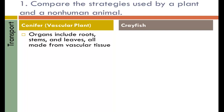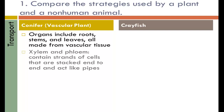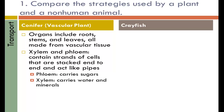For the vascular plant, organs include roots, stems, and leaves, which are all made from vascular tissue. Two types of vascular tissue are the xylem and the phloem. These contain strands of cells stacked on top of each other end to end, which act like pipes. The phloem carries sugars, whereas the xylem carries water and minerals.